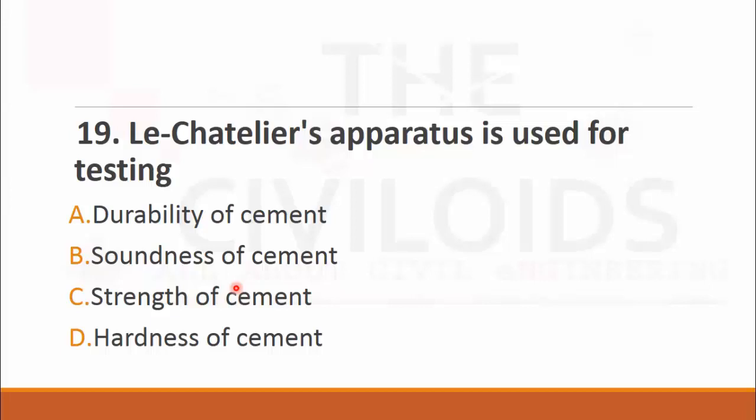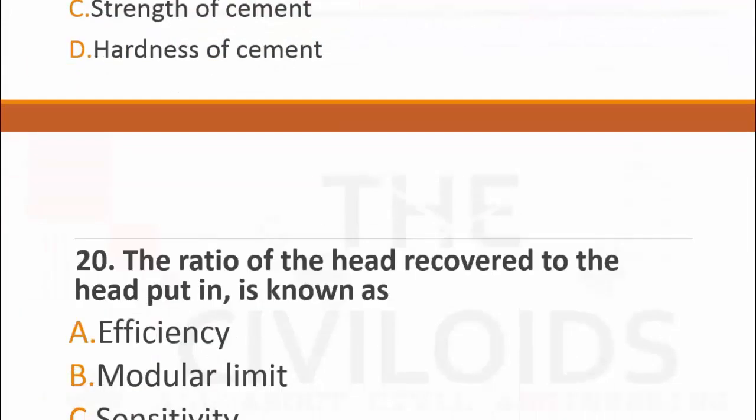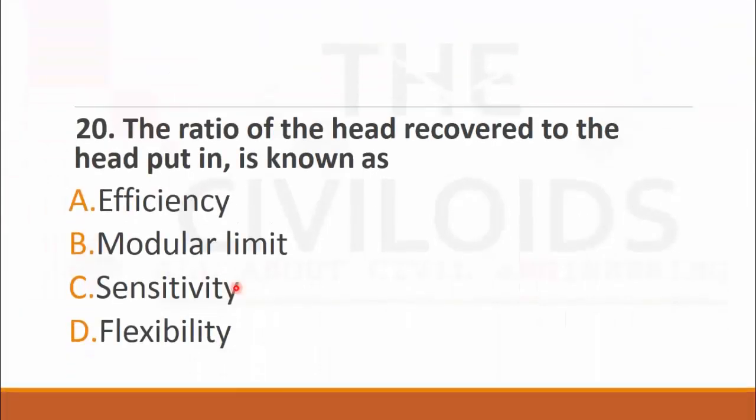MCQ number twenty: The ratio of the head recorded to the head supplied in a canal is known as. The choices are: A. efficiency, B. modular limit, C. sensitivity, and D. flexibility. The right choice for this last MCQ is A. efficiency.